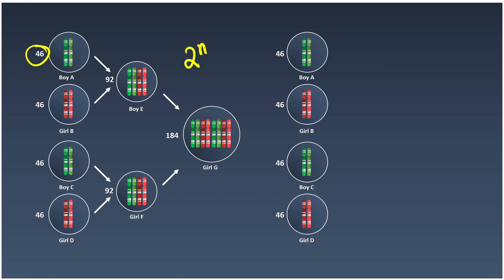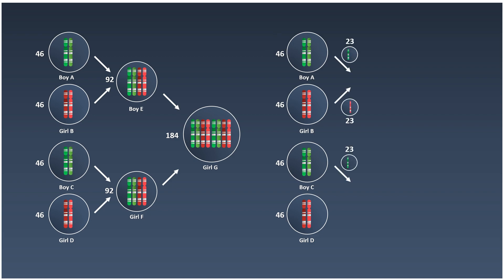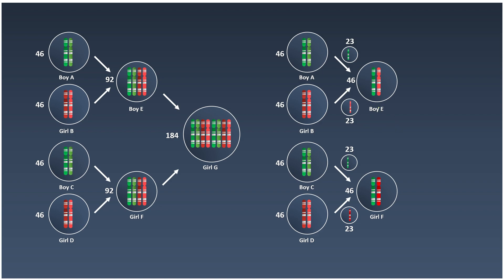Now imagine a scenario where we do have meiosis. Before giving birth to a child, we undergo meiosis to produce sperm and ovum cells. Meiosis produces daughter cells with only half the number of chromosomes. So instead of 46, the sperm only consists of 23, and the ovum only consists of 23. Whenever they fuse together to form the zygote, it goes back to 46 chromosomes. This is how we maintain the diploid number in humans. The same applies to Boy E and Girl F — when they decide to have children, meiosis halves their chromosomes, and fusion restores 46.